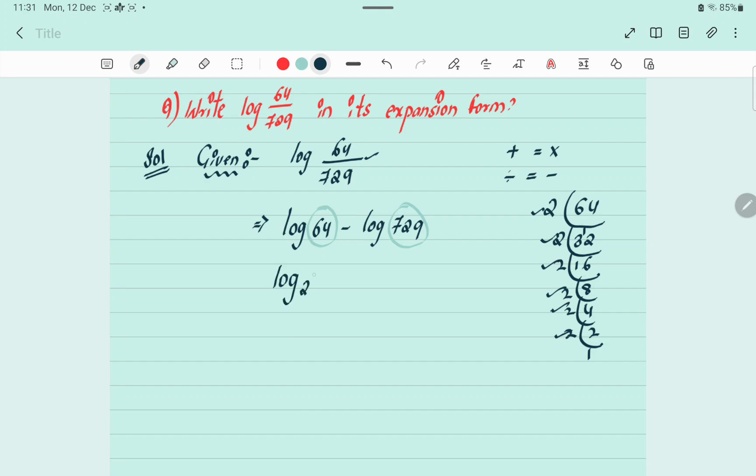So log 2 to the power of 6 minus log 3 to the power of 6. 729 LCM is 3 to the power of 6.